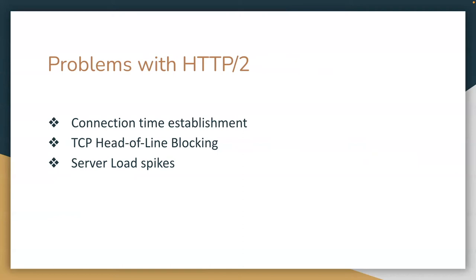With TCP head-of-line blocking, inherent in the TCP protocol itself, in the case of HTTP 2 since we're multiplexing over a single connection, if we lose packets or the connection is interrupted, then the connection cannot continue to transmit data until that packet has been accounted for, resent, and then the connection can continue.